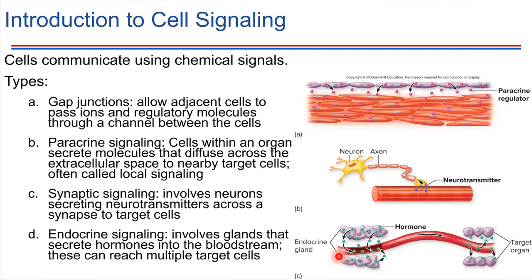Let's finish this chapter out with a little bit of information about cell signaling — how cells can signal each other and provide information to each other. There are four different types of cell communication styles, and it depends on the cells we're talking about which one of these mechanisms they would employ.